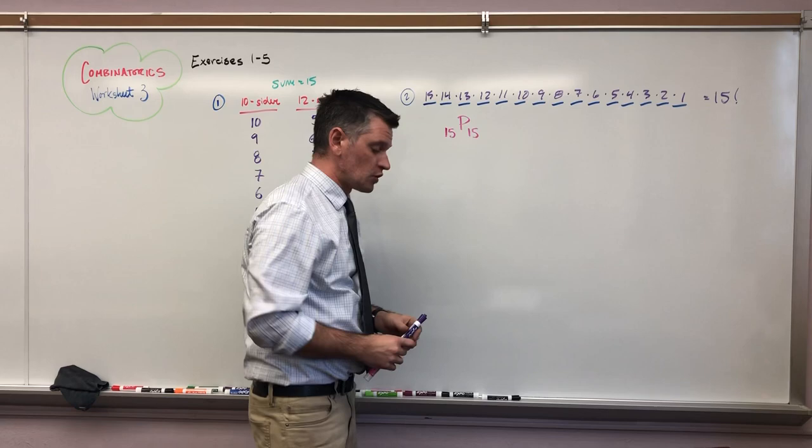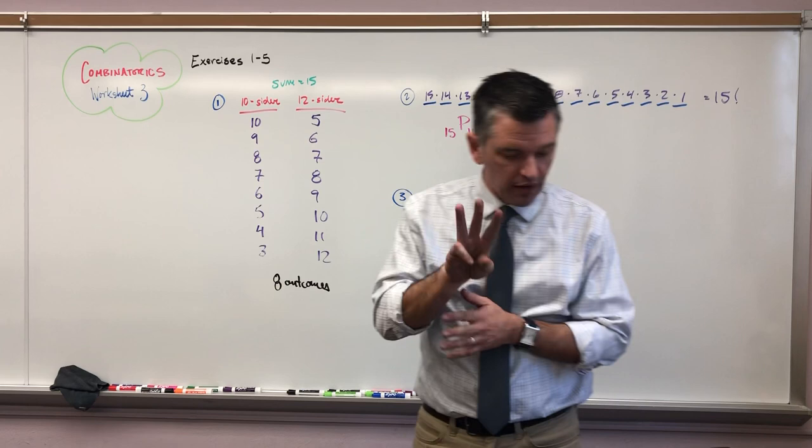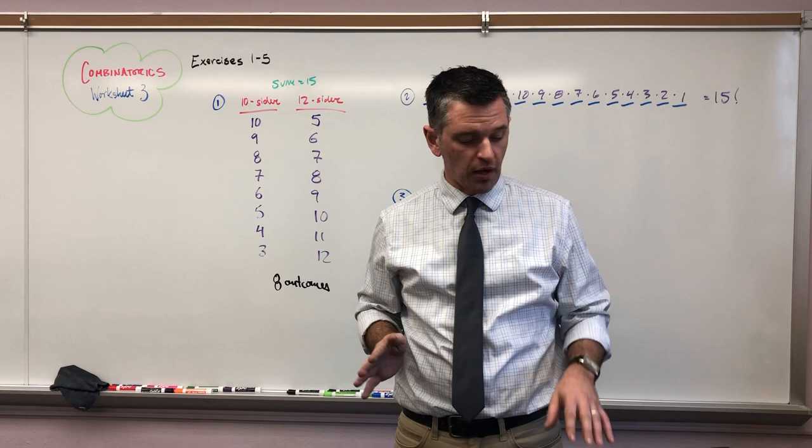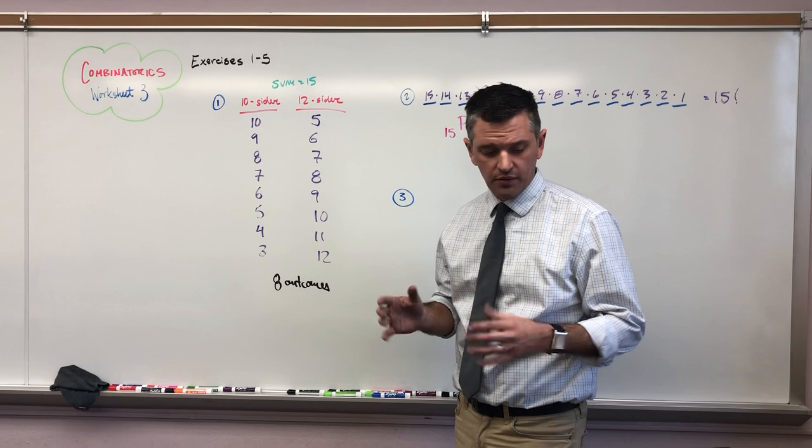Number three. So this says that the Russian alphabet has 32 letters. If we made an ID code out of three Russian letters and four traditional digits and we're not allowed to repeat the digits, how many ID codes are possible? Now this problem we saw on worksheet two and we made a big assumption. We made the assumption that well I guess the letters come first and the digits come second, okay?